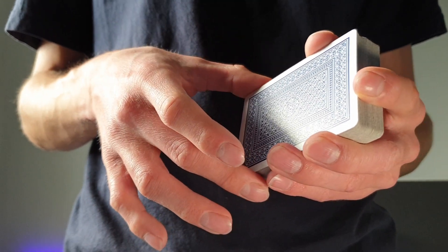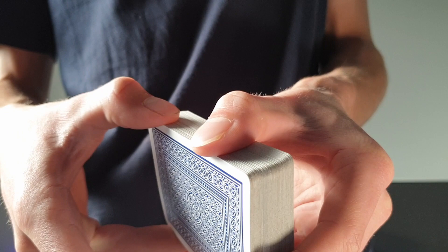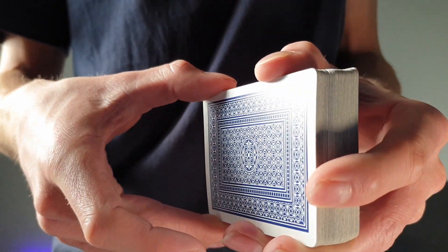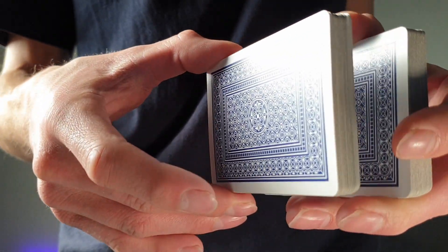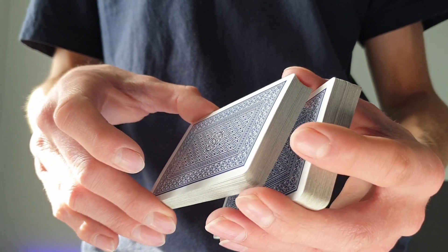Then what happens is we have to estimate roughly where half the cards are. We do this by looking at the corner here, and when you see about roughly half, we're just going to lift up with the thumb and the middle finger. So now you're holding two packets.